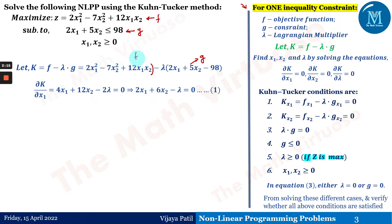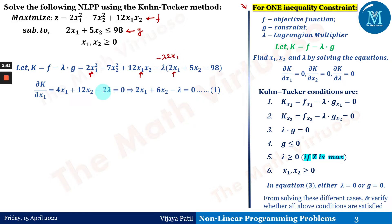In the expression for K, the terms containing x₁ are: 2x₁², 12x₁x₂, and −λ·2x₁. Differentiating: the first term gives 4x₁, the second gives 12x₂, and the third gives −2λ. Setting equal to zero: 4x₁ + 12x₂ − 2λ = 0, which simplifies to 2x₁ + 6x₂ − λ = 0. That is the first condition.